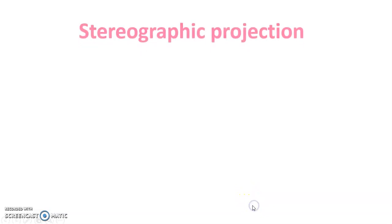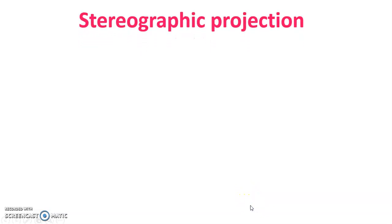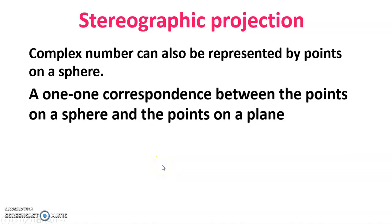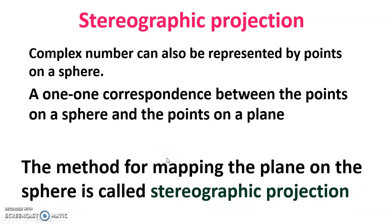Hello dear friends, welcome to my channel. Today's discussion is stereographic projection. Complex numbers can also be represented by points on a sphere. We shall establish a one-to-one correspondence between the points on a sphere and the points on a plane. The method for mapping the plane onto the sphere is called stereographic projection.